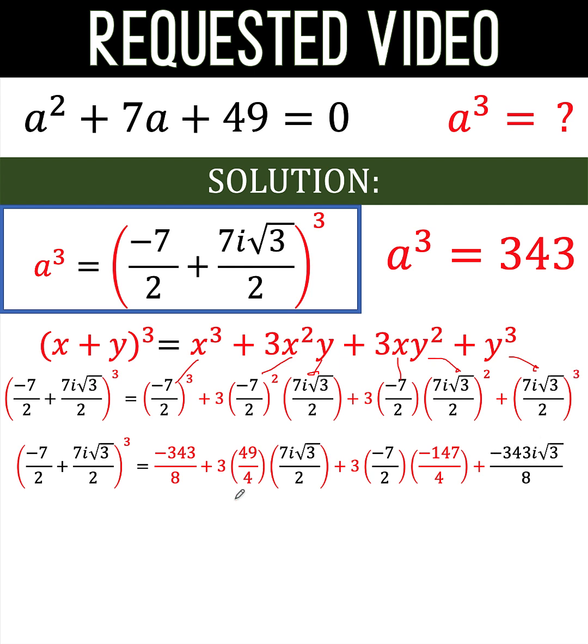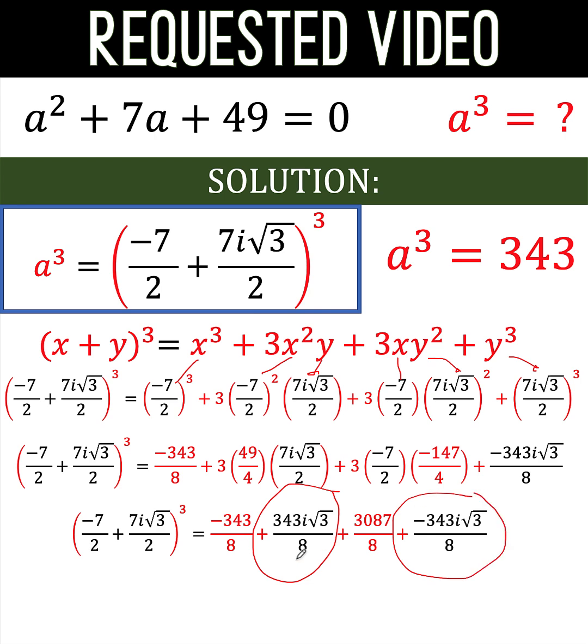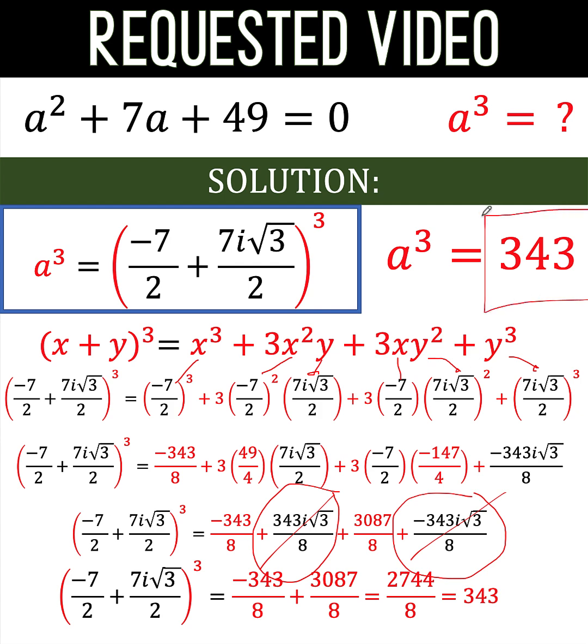Let's simplify further. Here is what we arrive at. Notice now that this part here and this part here are additive inverses and that resulted to 0, leaving us with negative 343 over 8 plus 3087 over 8, which is equal to 2744 over 8, which is also equal to 343. And that is now the value of our a cube. So it's verified that the value of this is 343.